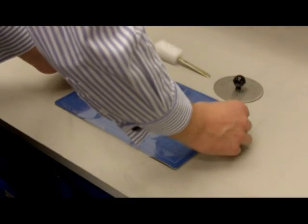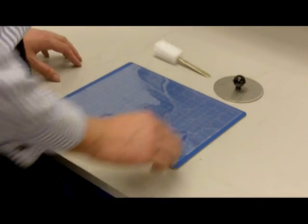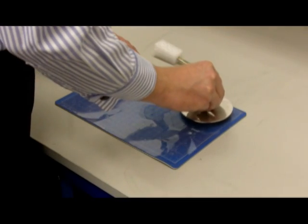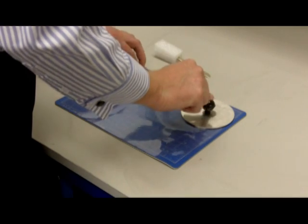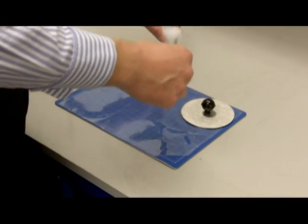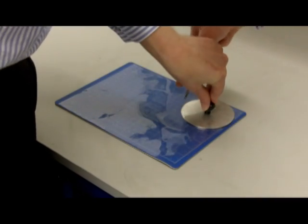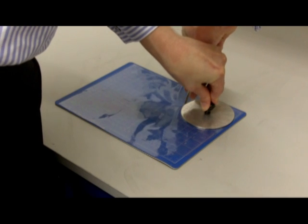Now let's look at cutting a film sample and starting a test. First choose the film you want to test and place it on a clean cutting surface. Using the template and scalpel, you cut out the film, leaving tabs either side for handling.